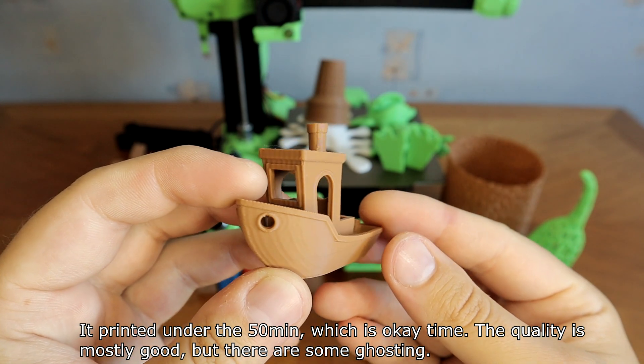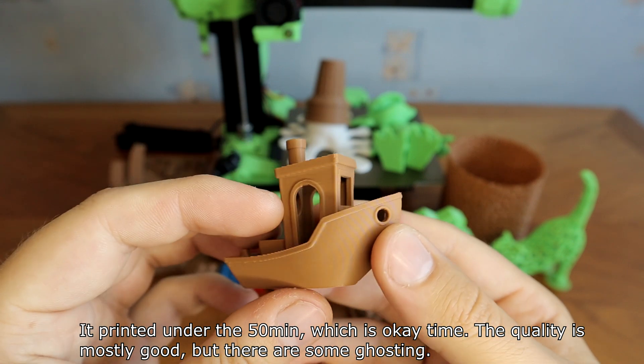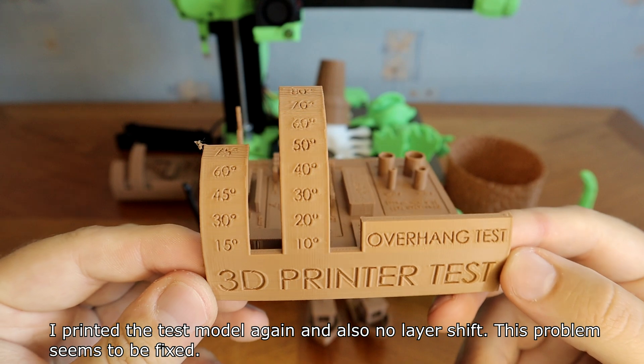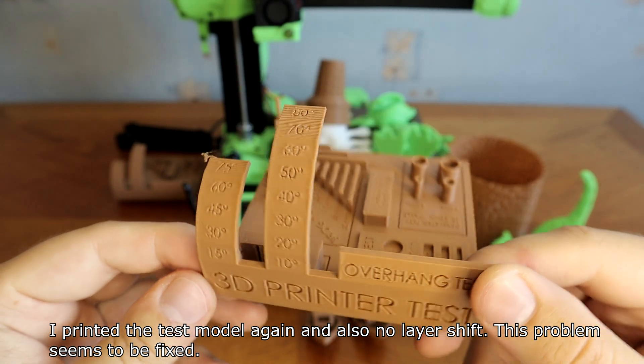I used the same file to print the benchy again and no layer shift anymore. It printed under 15 minutes, which is okay time. The quality is mostly good, but there is some ghosting. I printed the test model again and also no layer shift. This problem seems to be fixed.